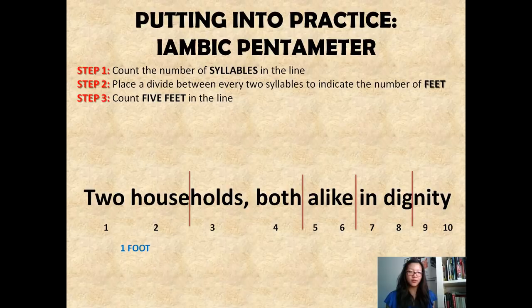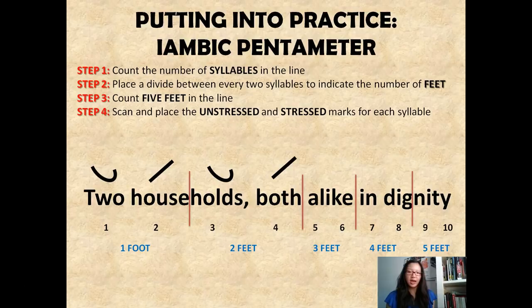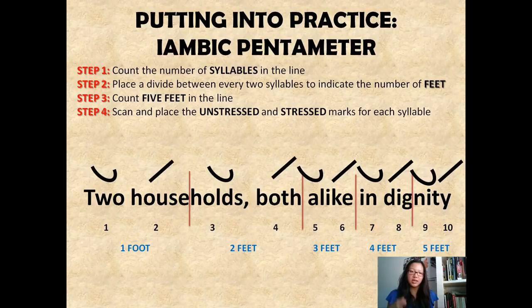Moving on to step four: we're going to scan and place the unstressed and stressed marks for each syllable. The unstressed syllable looks like a curved line, followed by a stressed syllable — unstressed, stressed, unstressed, stressed — throughout the whole line. Think of it as music; you're just following a beat that is constant throughout the whole poem. The reason for this was that people had to learn how to memorize lines, and the easiest way was by following a specific form and structure.